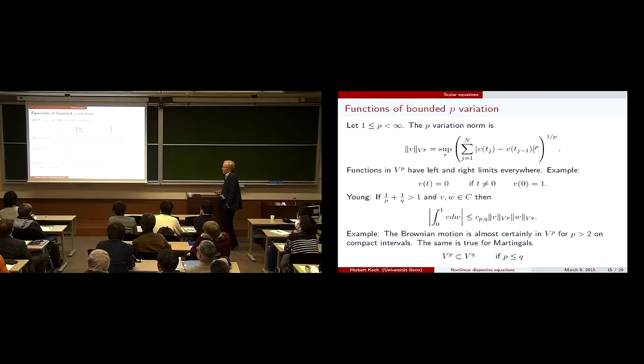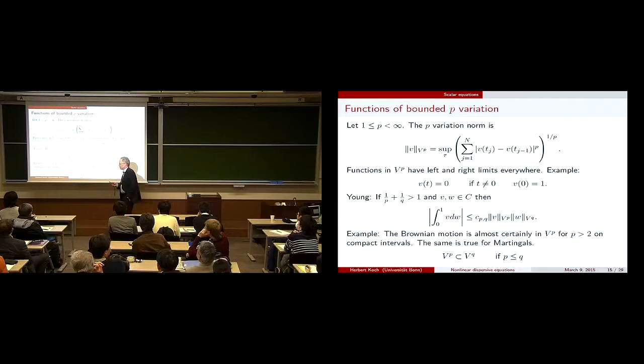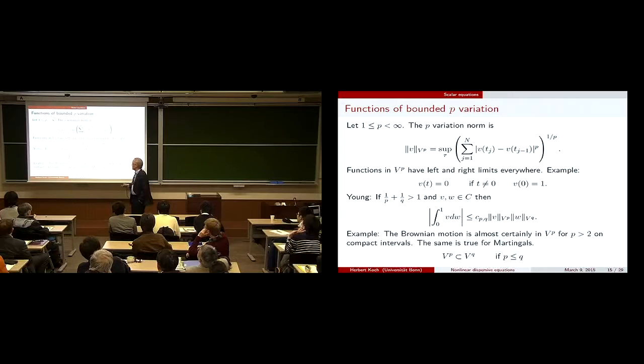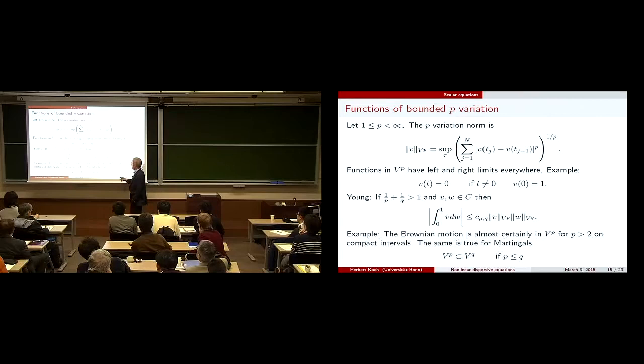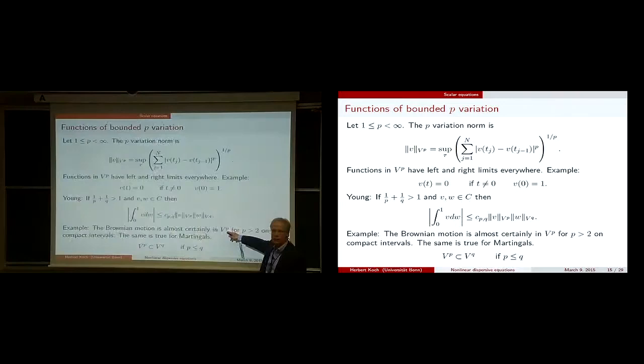Young in 1912 introduced an integral. He asked for the function to be also continuous. If 1/p + 1/q > 1, then here's this bound. Brownian motion is almost surely in V^p for p larger than 2. If it were in V^2, then there would be no stochastic integration, because everything would be pathwise. And basically the same is true for martingales.